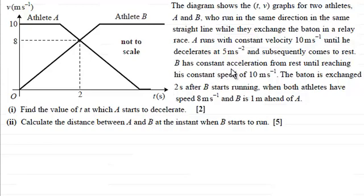B has constant acceleration from rest until reaching his constant speed of 10 meters per second. And the baton is exchanged two seconds after B starts running, when both athletes have a speed of 8 meters per second and B is 1 meter ahead of A.